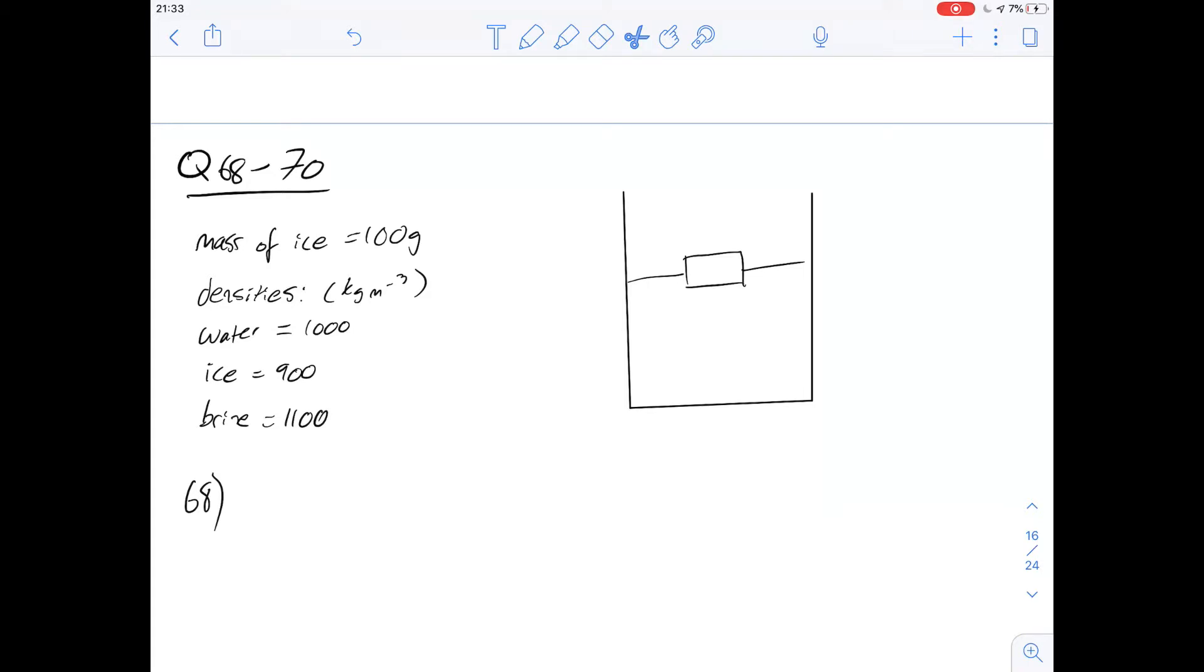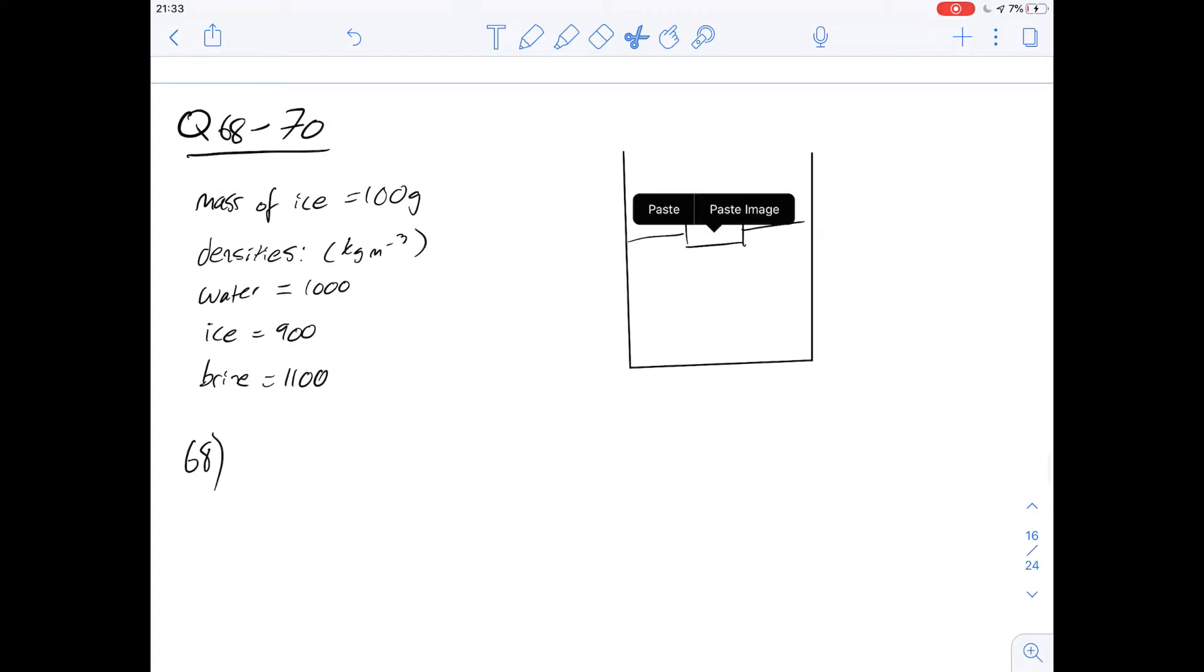Okay, so we've got our ice cube here, which I've drawn out, and we've basically got two forces acting on it. We've got the weight of the ice cube pulling it down, but because it's floating on the surface there's also going to be a buoyancy force.